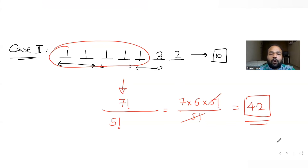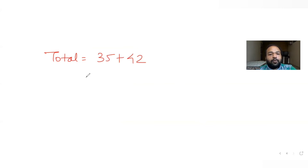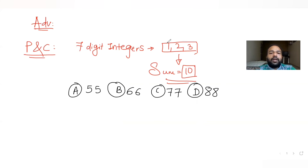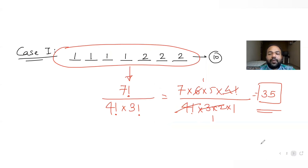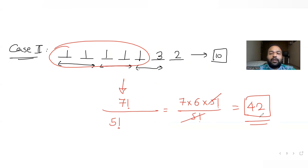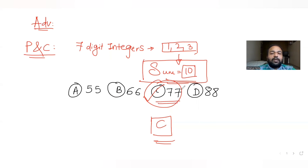With the two cases that are only possible, the total number of seven-digit integers is 35 plus 42, which gives 77. So 77 seven-digit integers can be formed with one, two, and three such that the sum of the digits equals 10. Option C is the correct answer. In the first case I can form 35, and in the second case I can form 42, giving a total of 77.